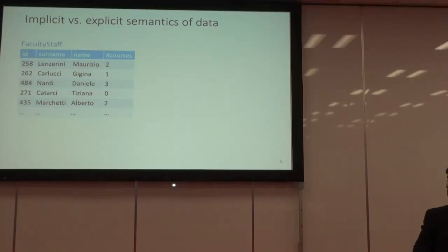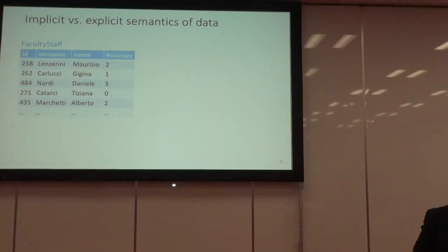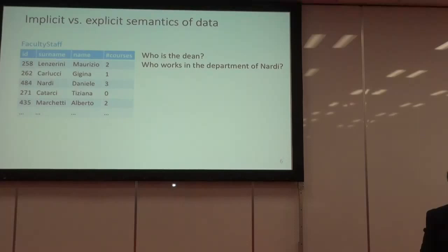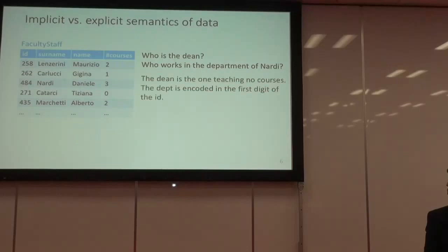Nowadays, dealing with large amounts of complex data, semantics is even more important. Often, data has meaning that is implicit rather than explicit, and to make profitable use of data one needs to make this meaning explicit. Consider a simple relational table about faculty staff in a university — professors and lecturers with surname, name, ID, and number of courses taught. If someone asks who is the dean or who works in the same department as Nardi, the table seemingly cannot answer.